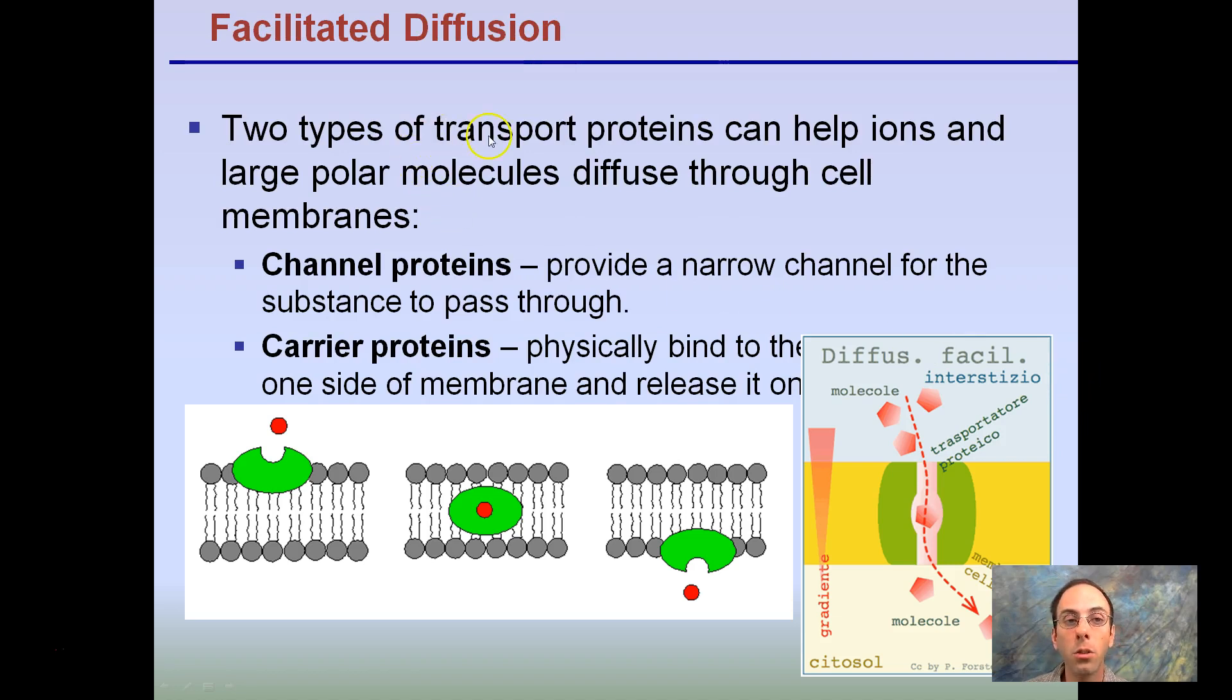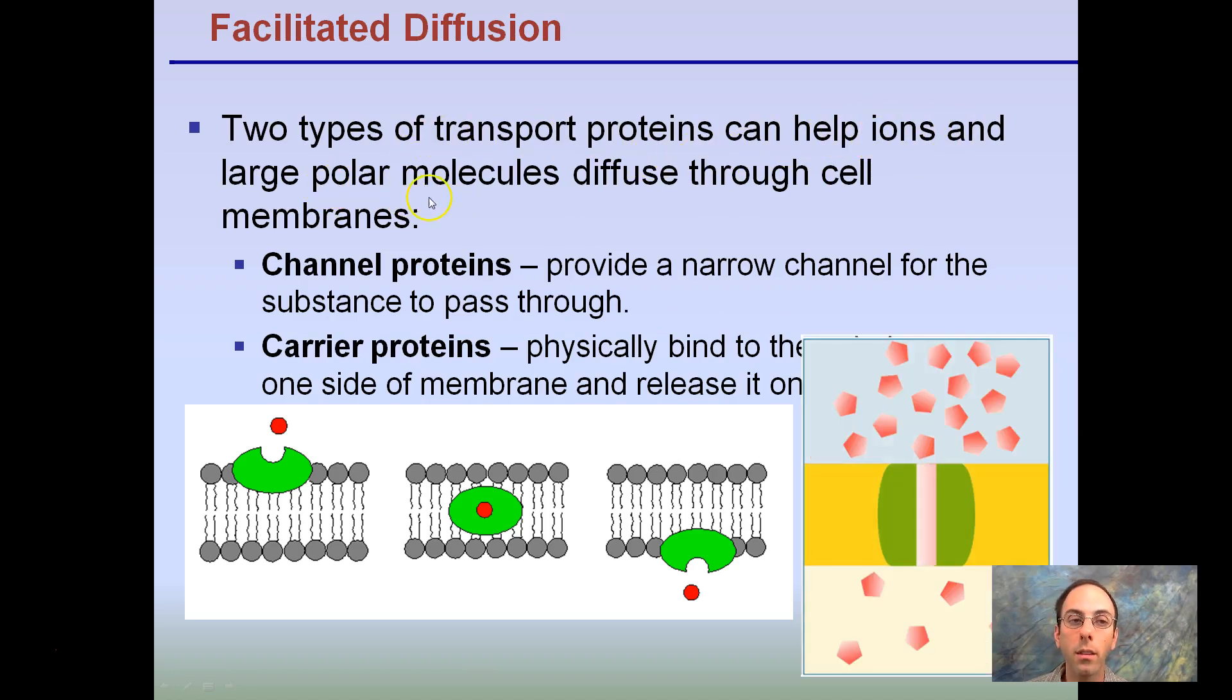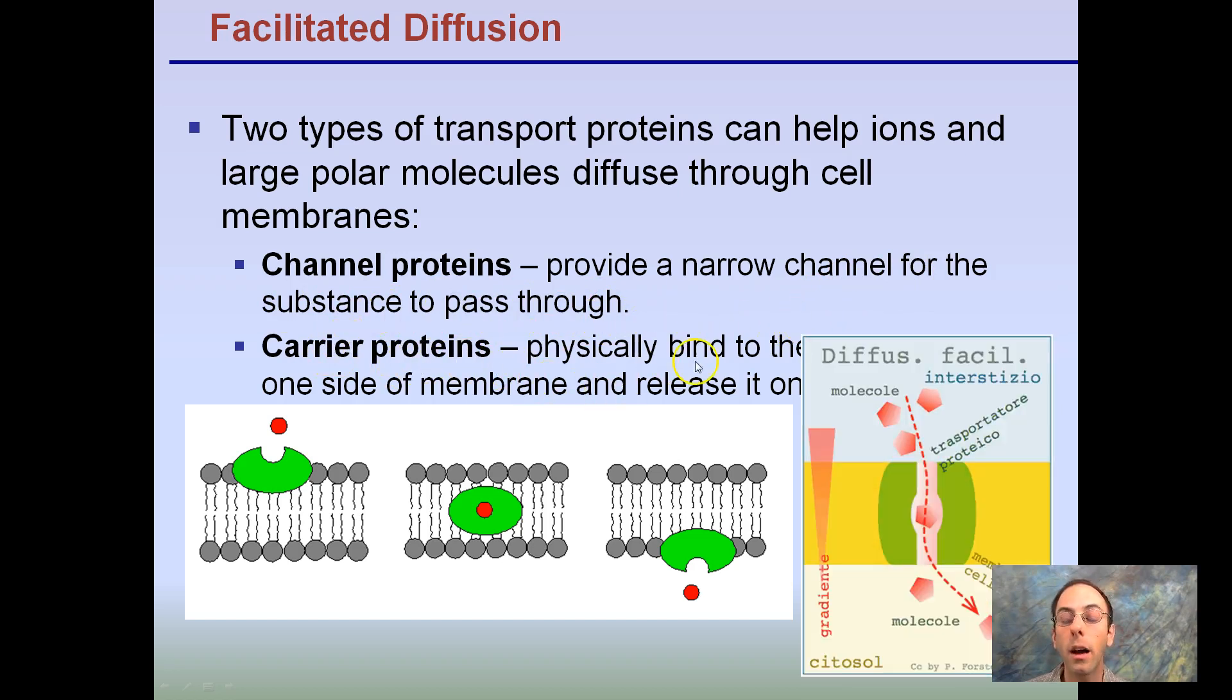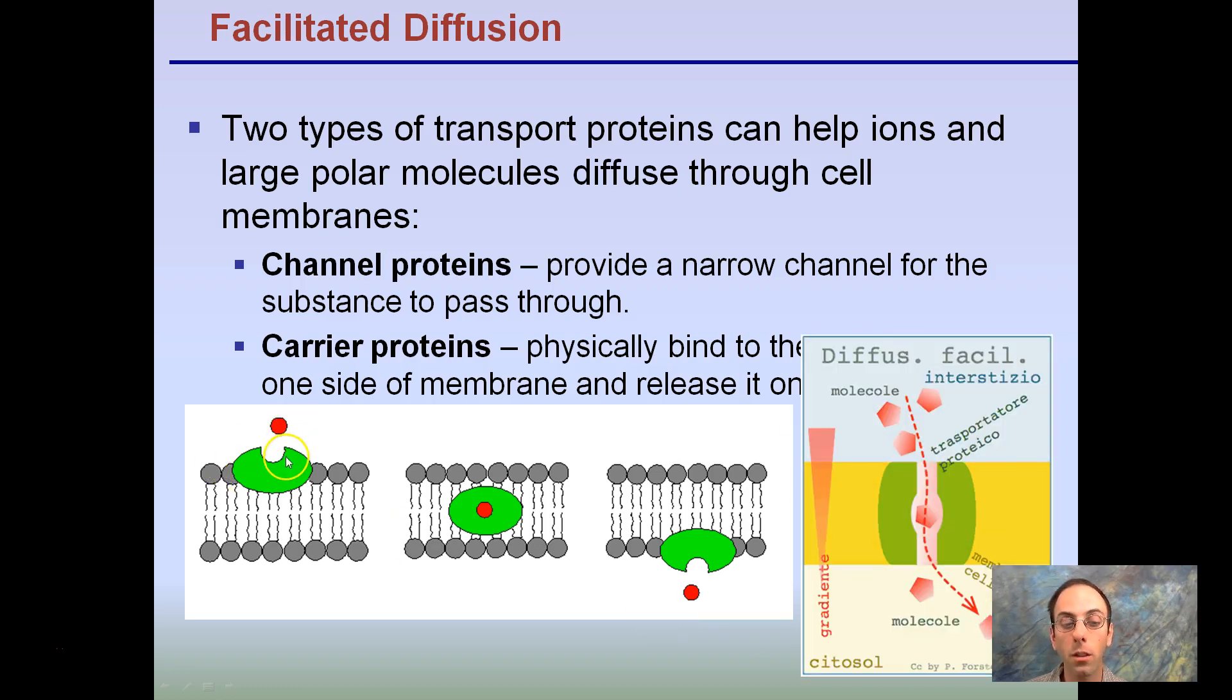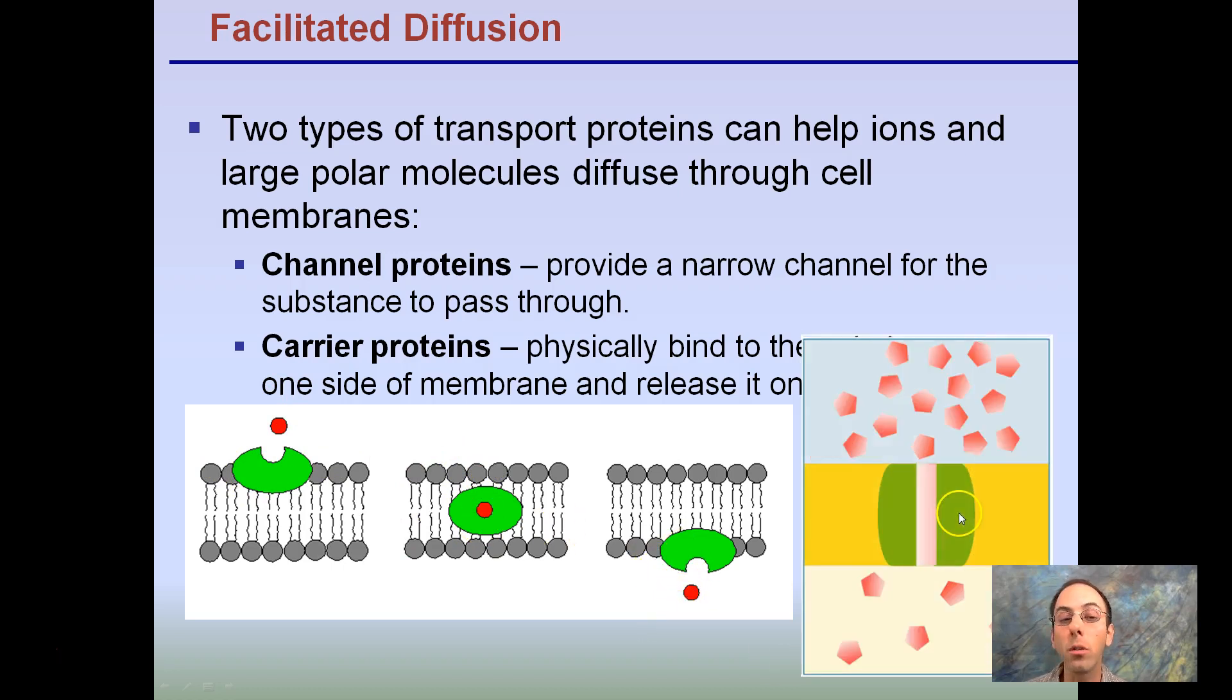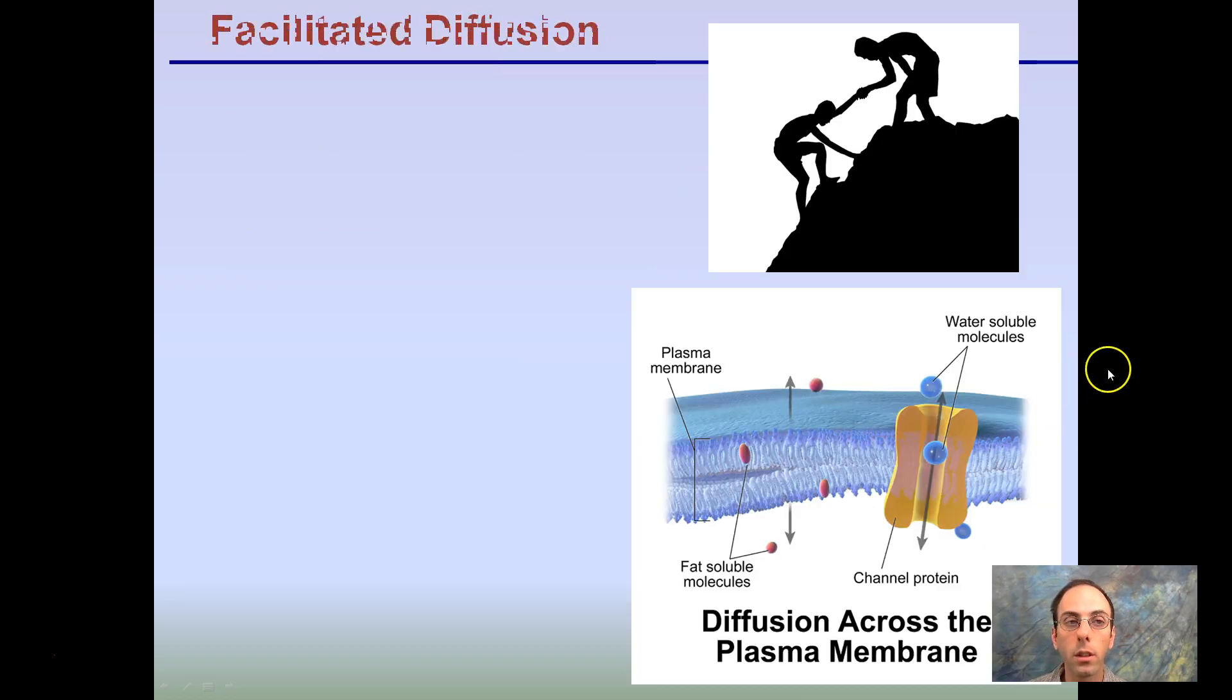Facilitated diffusion. Two types of transport proteins here. Help ions and large polar molecules diffuse through the cell membranes. Channel proteins provide a narrow channel for the substance to pass through. Carrier proteins physically bind to one side of the membrane and release it on the other side. So, you can see here is our binding that's occurring, carrying it through, and transferring it to this side. This is an example of our channel proteins. It's simply just a channel, allowing these red molecules to be able to pass through. Carrier proteins are physically grabbing and carrying them across from one side to the other. This is an example of a channel protein here.